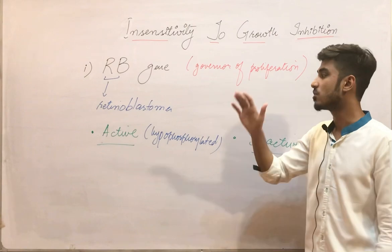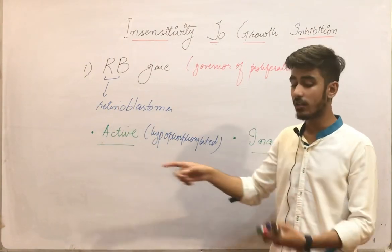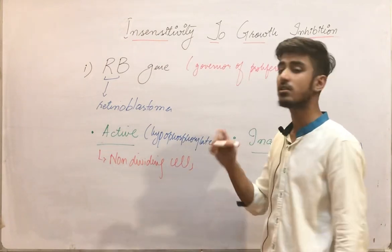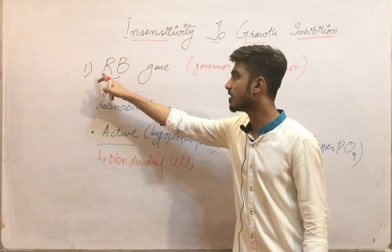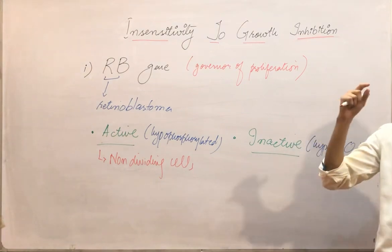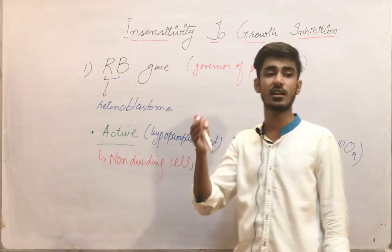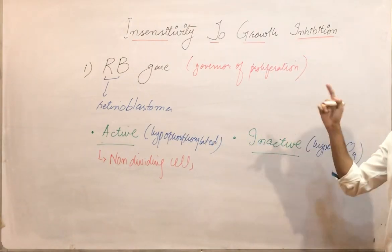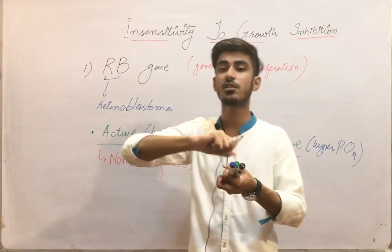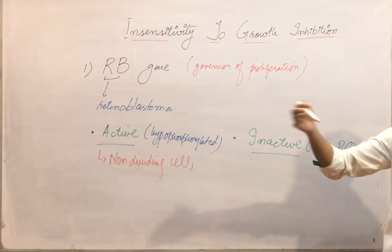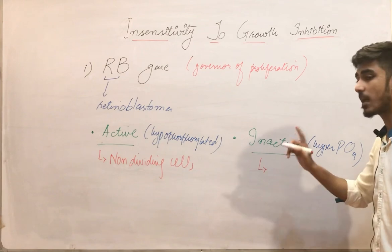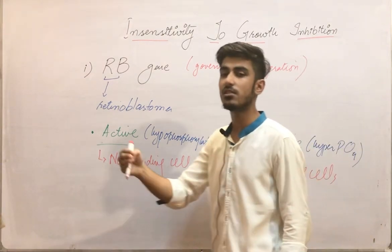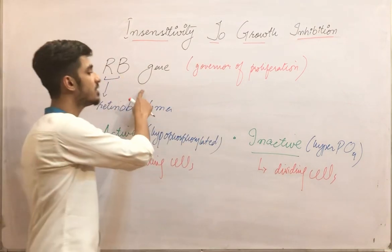In non-dividing cells, the RB gene will be active, meaning in the hypophosphorylated form. When the RB gene is inactive, the negative regulation is removed — the tumor suppressor function is removed — and obviously the cell cycle will progress. So RB will be inactive in dividing cells, where cell cycle progression is occurring.